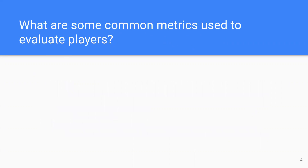We'll talk about common metrics people use to evaluate players. Some common ones are points and plus/minus. We also have goals, assists, plus/minus, time on ice, and face-off win percentage. We'll talk a little bit more about plus/minus, which has some major issues similar to what we've seen in basketball.